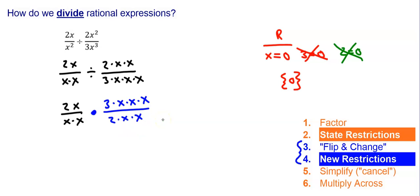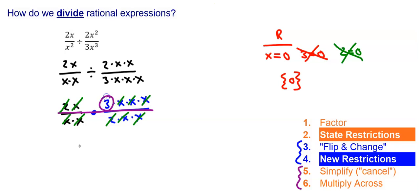Now we continue this just like it was a multiplying problem — simplify and multiply across. I make this one big numerator and one big denominator, and then start canceling things that divide to give me one. I have a 2 in the top and bottom — that's one. I have x's in the top and bottom canceling out. I don't have a 3 in the denominator. After canceling all the x's, I'm left with just the number 3. So my final answer is 3, but x cannot equal 0.